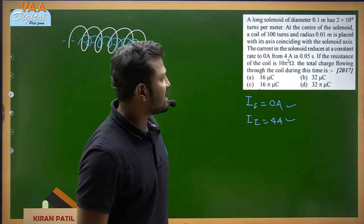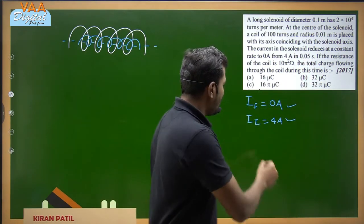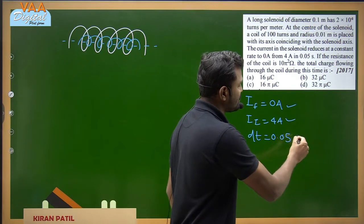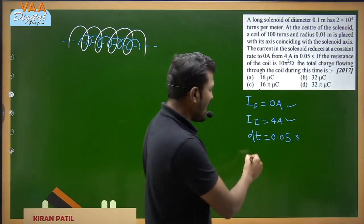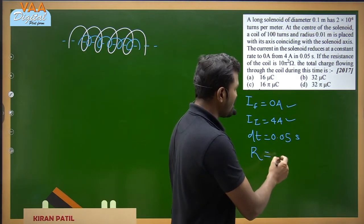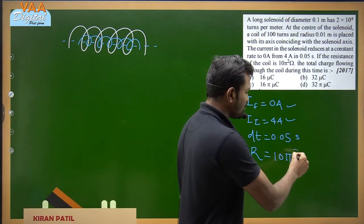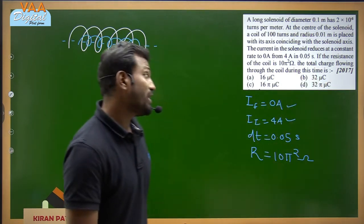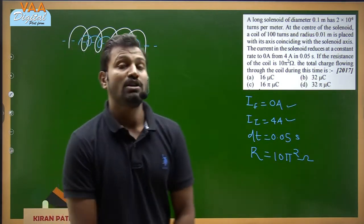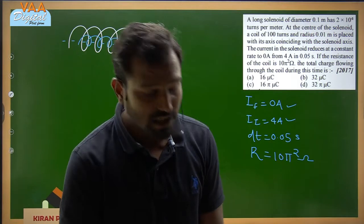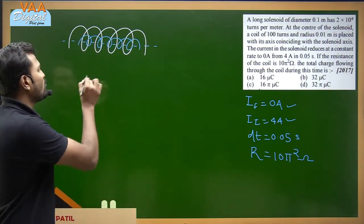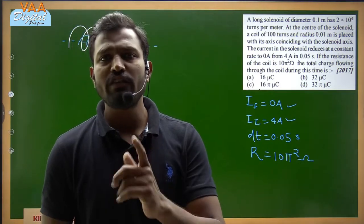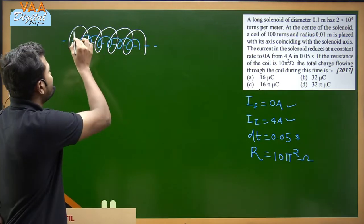The initial current is 4 A and the final current is 0 A. The time dt = 0.05 seconds. The resistance of the coil R = 10π² Ω. We need to find the total charge flowing through the coil in this time.